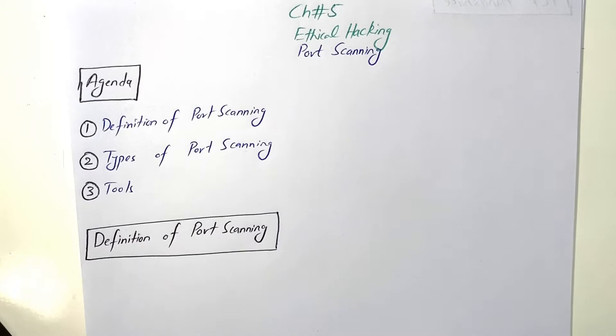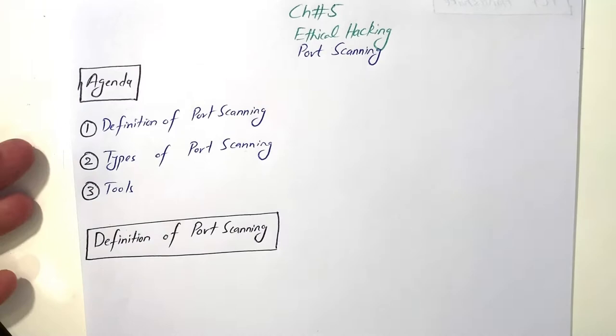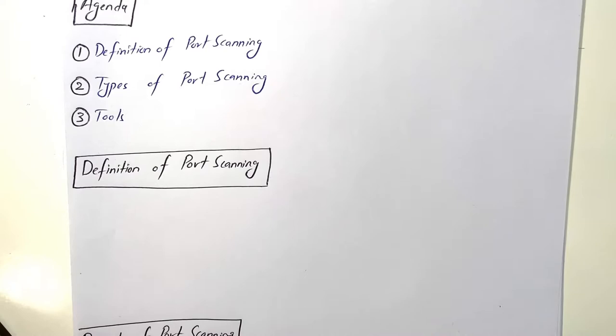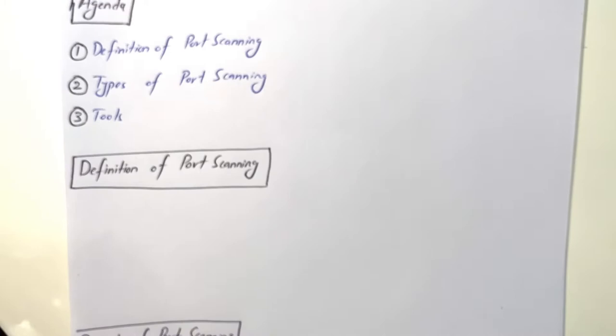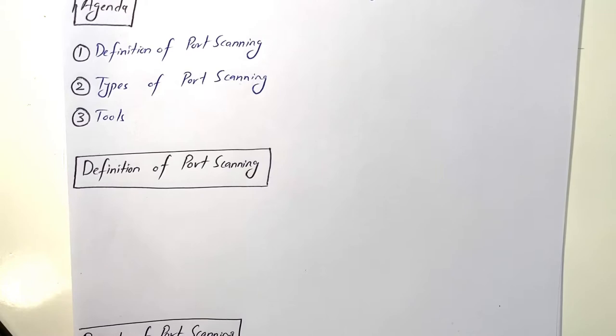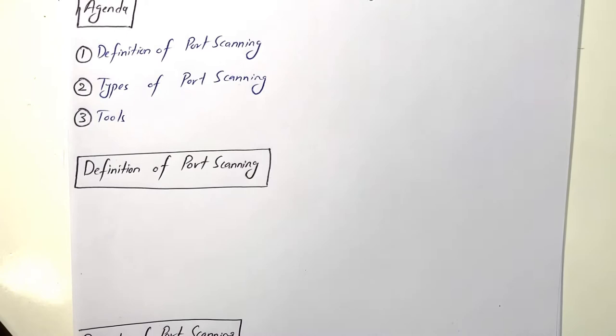Hello everyone, today we will discuss chapter number five of the Ethical Hacking course. This chapter is about port scanning. We have three agenda items: the definition of port scanning, types of port scanning, and tools used in port scanning. We will discuss mainly six different types of port scanning, and some tools that we can use for it.